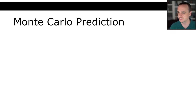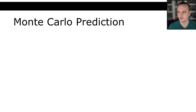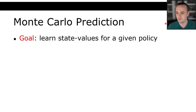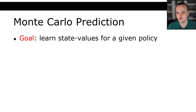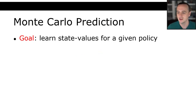Each of these bandit problems are related because the return after actions you take is based on the future actions as well. Monte Carlo prediction — remember, prediction is where we try to estimate the values of actions, and control is how we update the policy. The goal of Monte Carlo prediction is to learn the state values for a given policy. If I tell you what you should do in a given state, that's a policy, and Monte Carlo prediction uses that policy to generate episodes and learn the state values for each state or state-action pair.